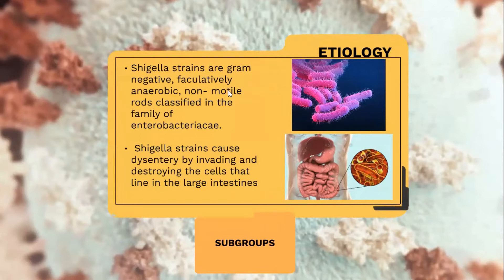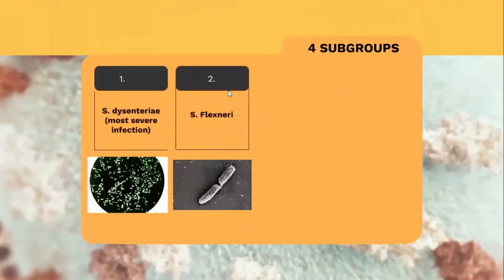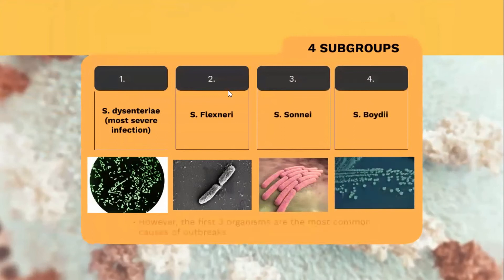Shigella bacteria cause dysentery by invading and destroying the cells that line the large intestines. There are four subgroups of Shigella species that cause bacillary dysentery. The first is Shigella dysenteriae, which is the most severe infection. The second is Shigella flexneri, the third is Shigella sonnei, and the fourth is Shigella boydii. However, the first three organisms are the most common causes of outbreaks.